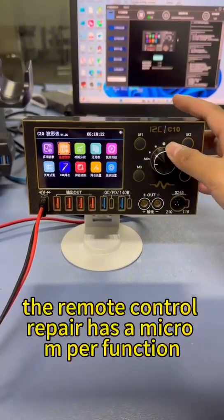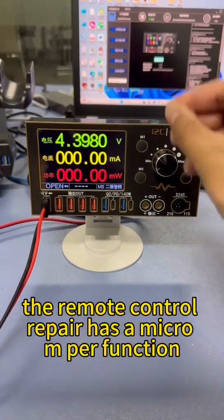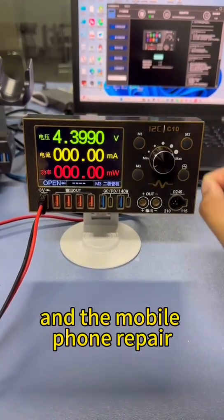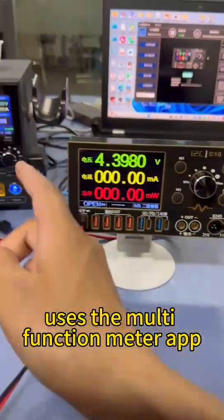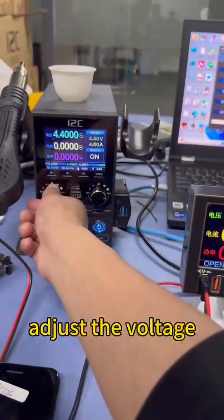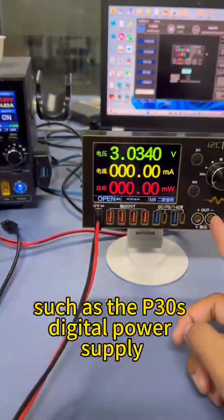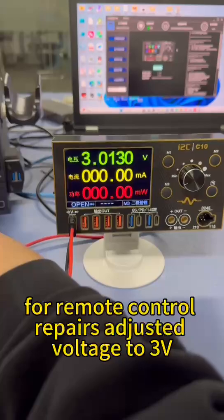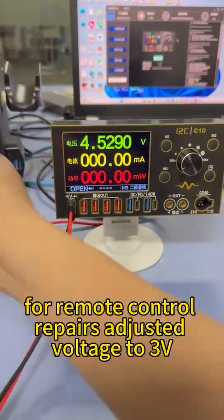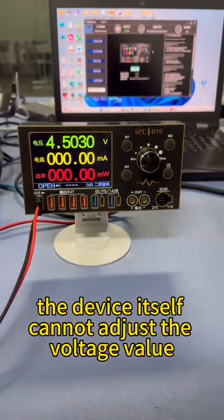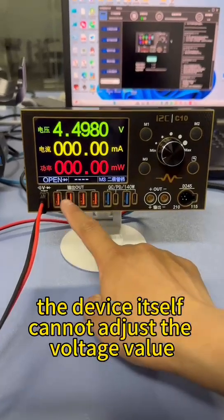The remote control repair has a microamper function and the mobile phone repair uses the multifunction meter APP. Adjust the voltage on a connected regulated power supply, such as the P30's digital power supply for remote control repairs adjusted voltage to 3V. The device itself cannot adjust the voltage value.